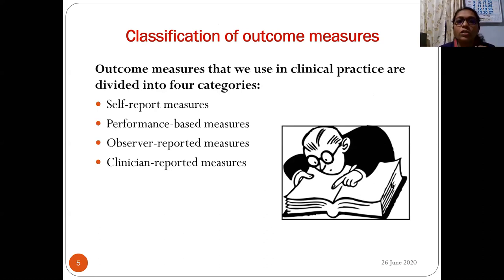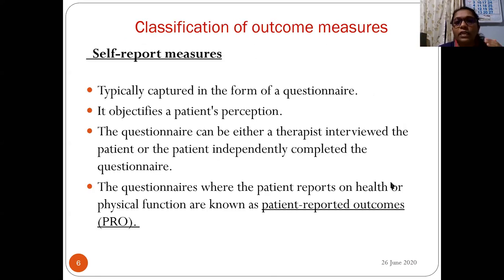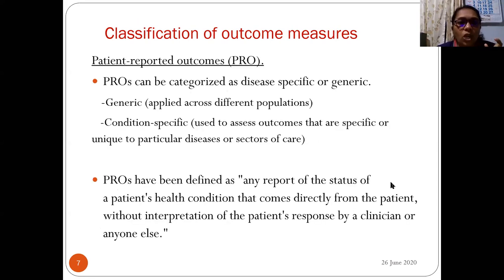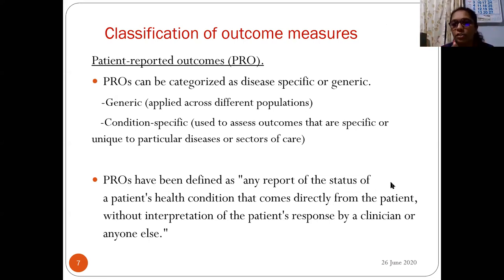Self-report measures are typically captured in the form of a questionnaire — they objectify a patient's perception. The questionnaire can be therapist-administered or independently completed. When the patient reports on health or physical function directly, it is known as a patient-reported outcome measure (PROM). PROMs can be categorized as disease-specific or generic — generic applies across different populations, while condition-specific assesses outcomes unique to a particular disease.